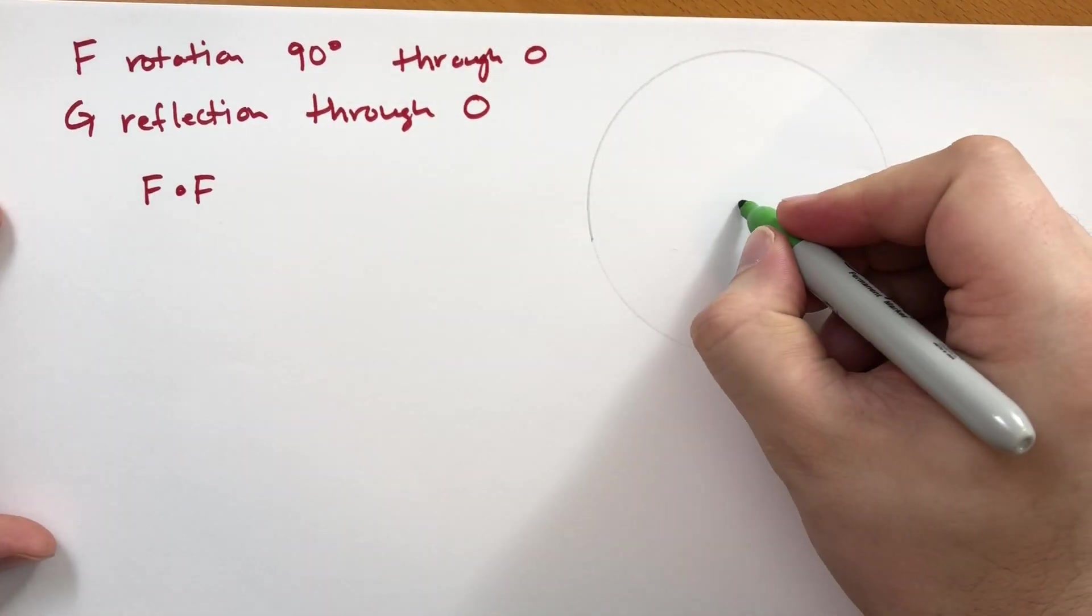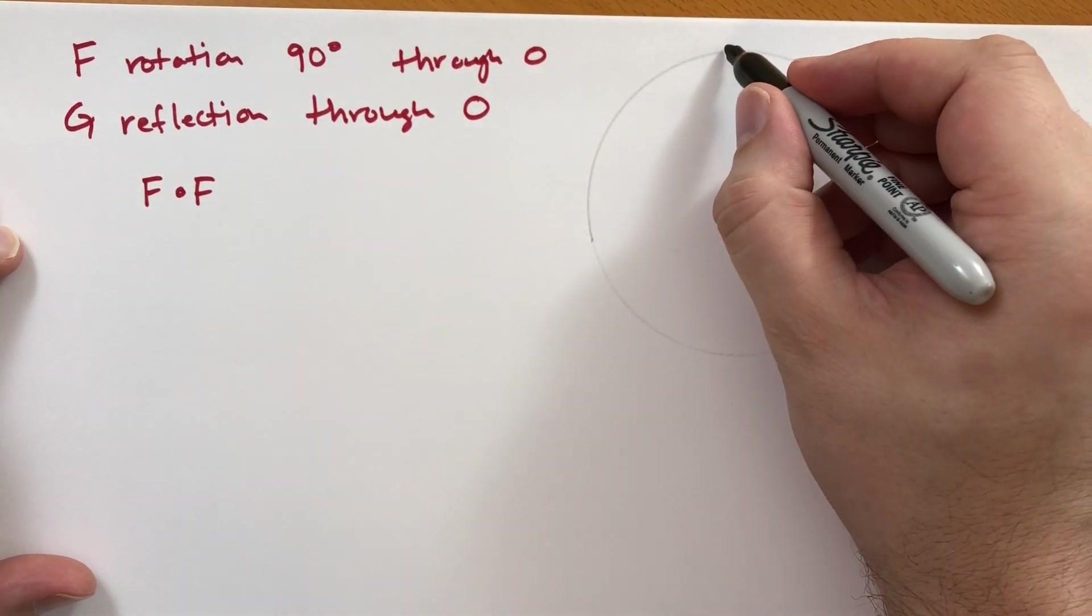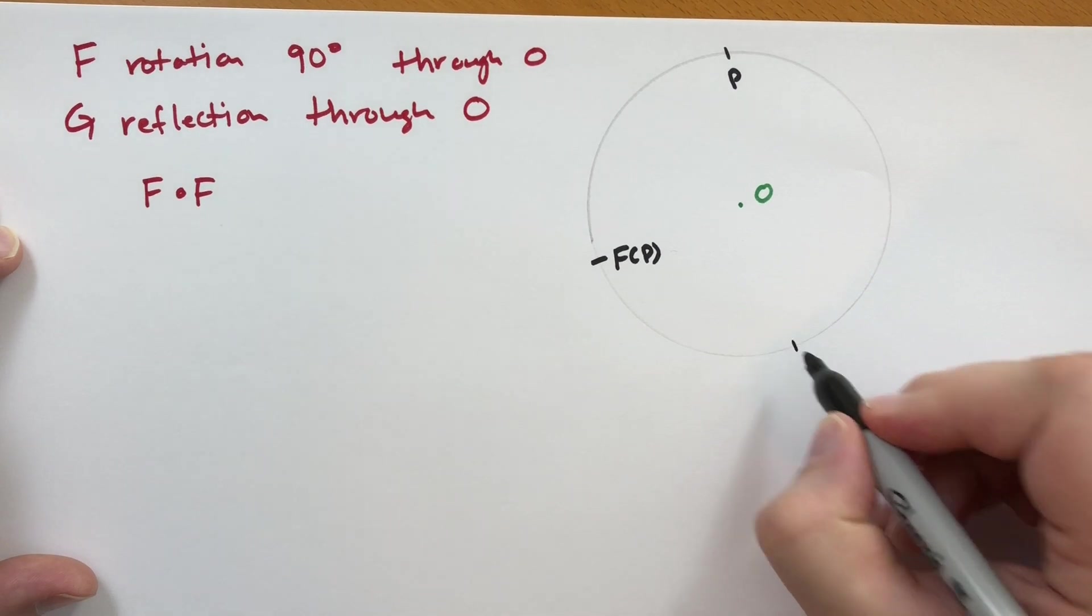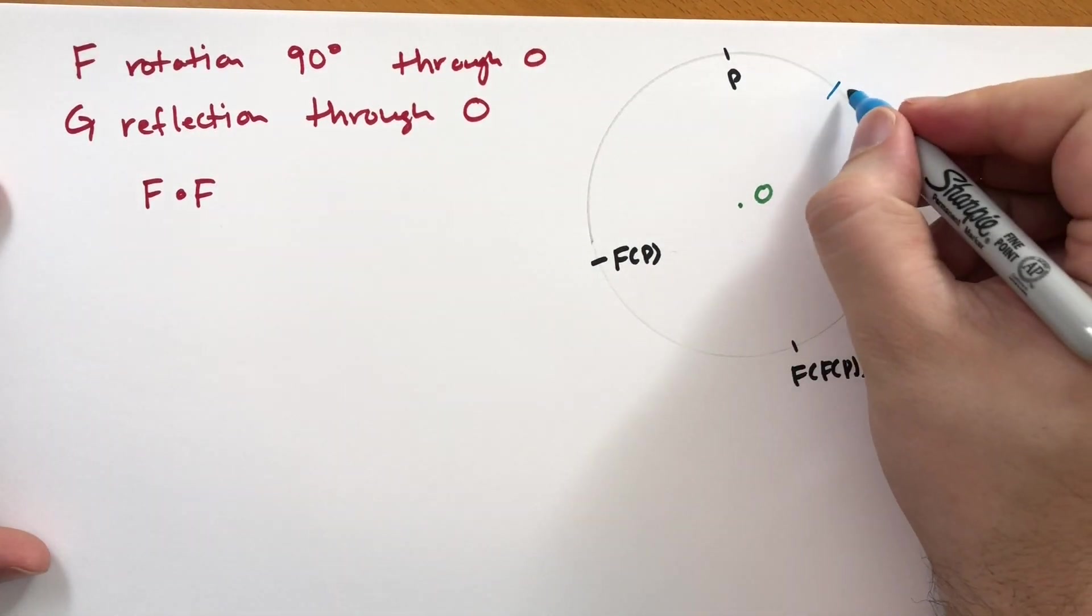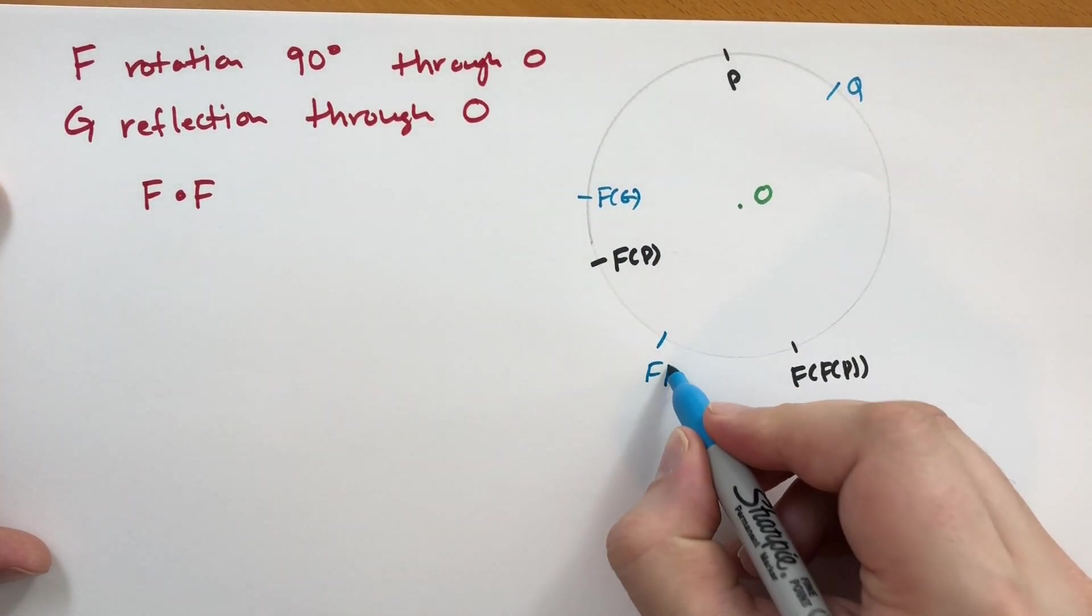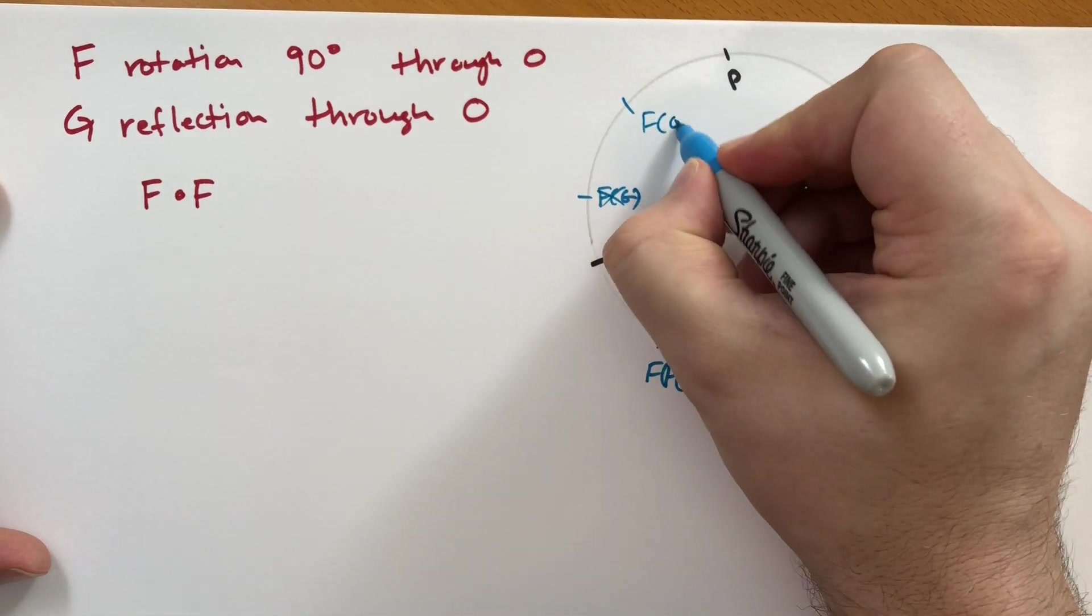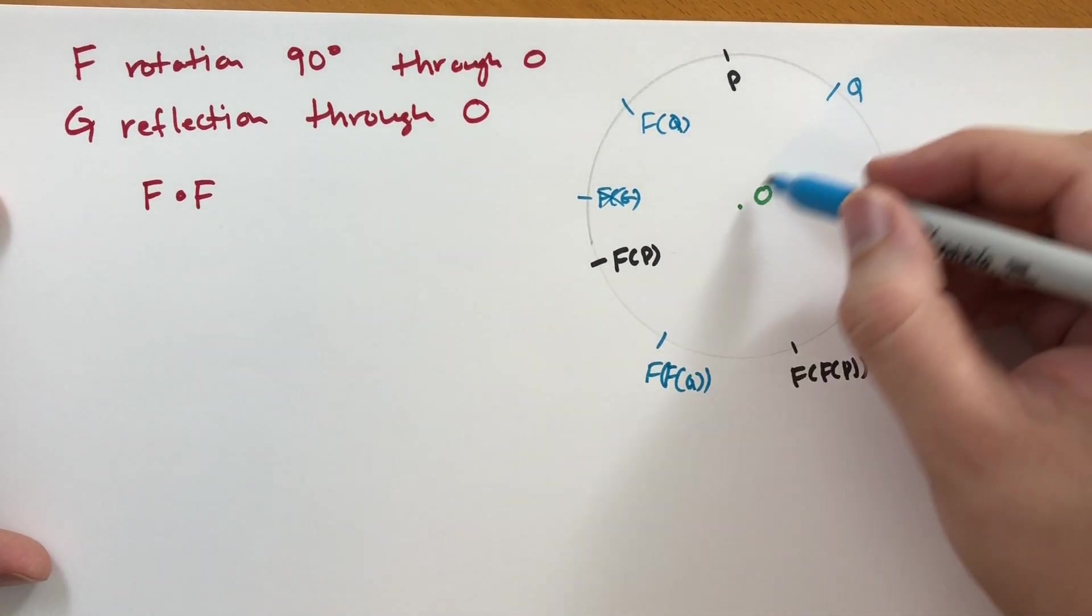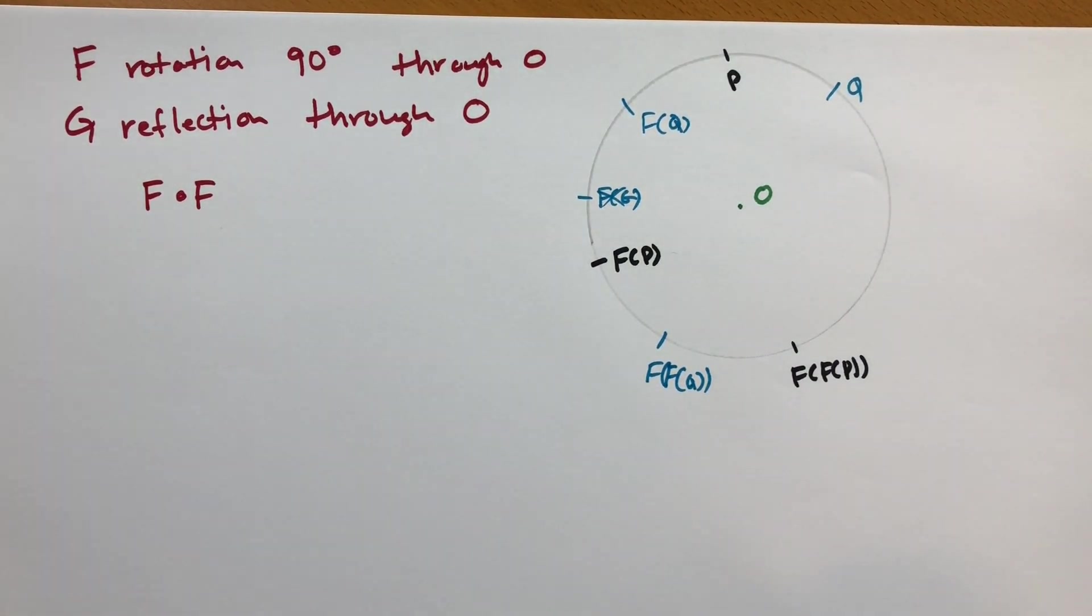So if we were to take F and apply it twice, what's happening is all of these points—let me draw what that looks like here. Let's use my compass to draw a nice little circle. So here's a circle. Let's take O in green. This is O. So what's happening when we take this rotation of 90 degrees—if we had a point here, we'd go over here. This would be F of P. And then applying F twice, we would get F of F of P.